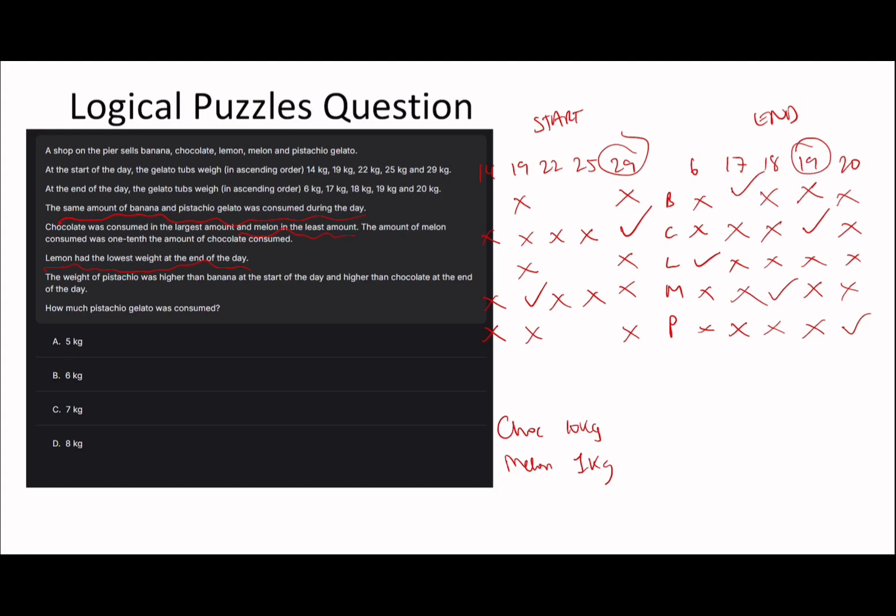The weight of pistachio was higher than banana at the start of the day. The same amount of banana and pistachio were consumed. Probably now we can write down that chocolate was 10 kg consumed. Chocolate was consumed in the largest amount.